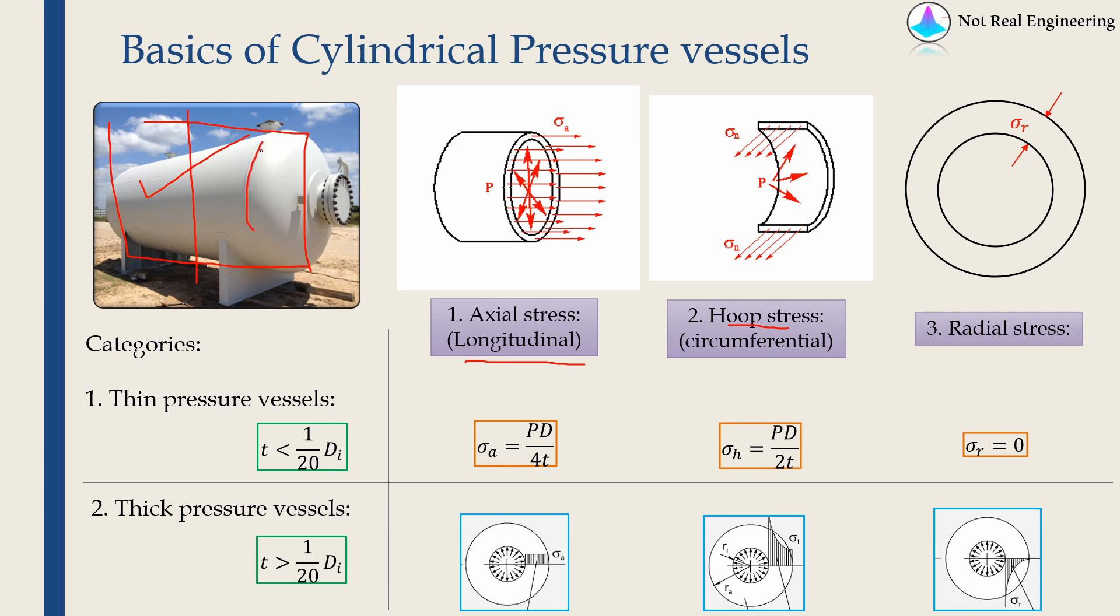Then depending upon the direction of the weld, we will decide which stress is the critical stress. As an example, for a weld like this, the axial stress will be the critical stress. But if the weld is something like this, then hoop stress will be the critical stress.